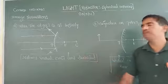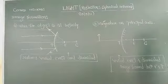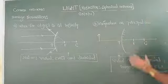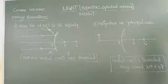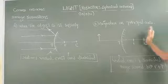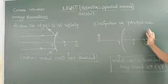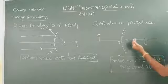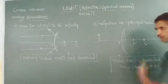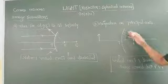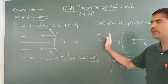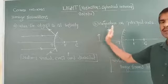Next question is: can I keep the object beyond C? Can I keep the object at C? Here, keeping the object at C, at focus, or between focus and center of curvature is not possible, because focus and center of curvature are on the other side — on the painted surface. That means I can keep the object anywhere on the principal axis.